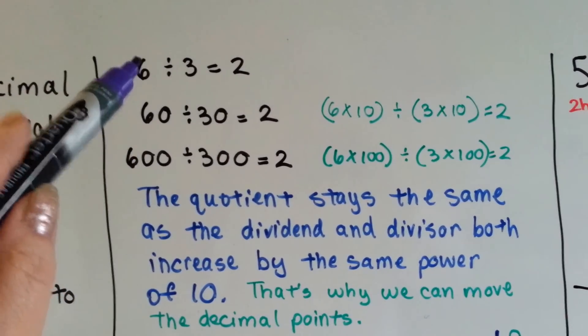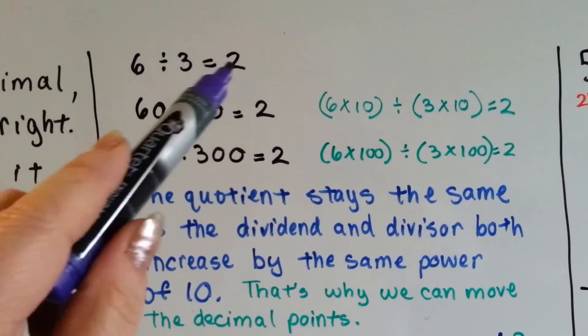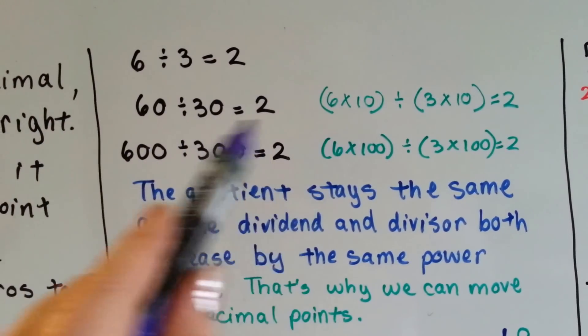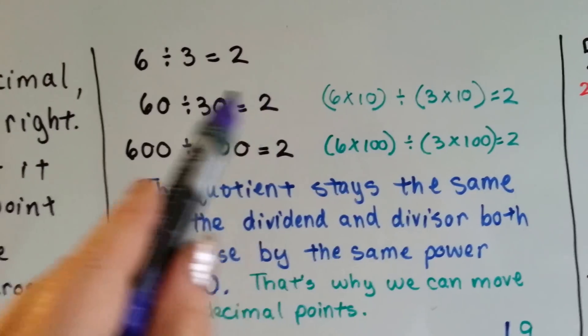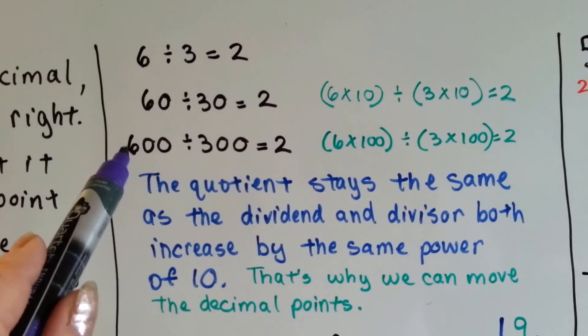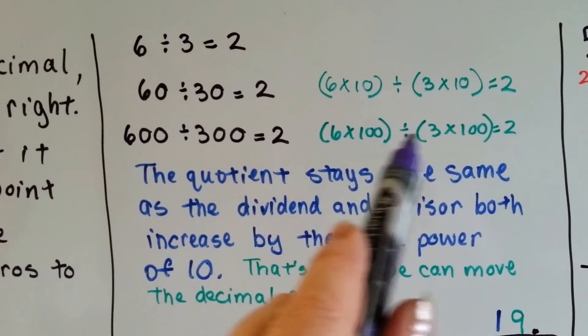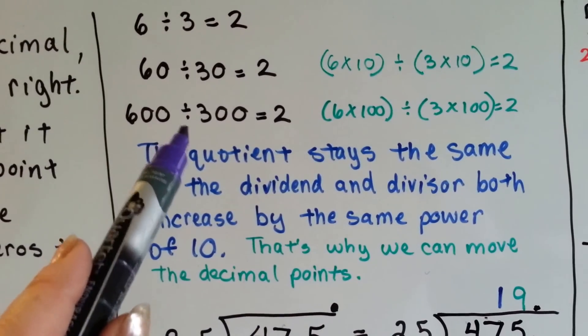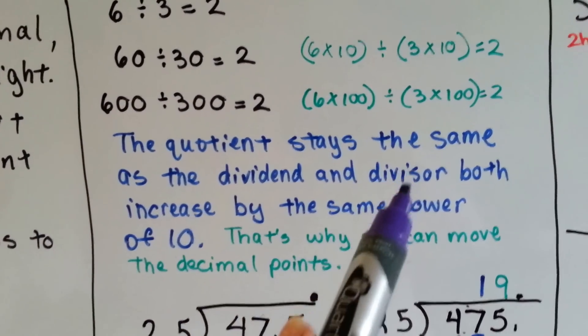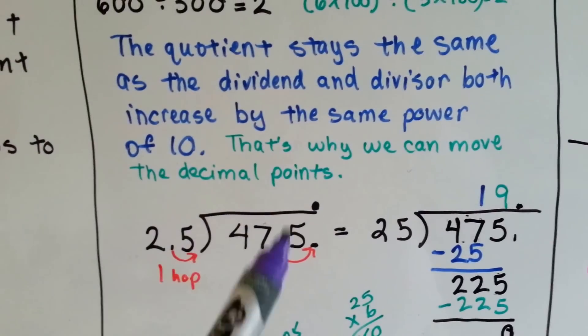So if we divide 6 by 3, we're going to get 2. And if we multiply the 6 and the 3 both by 10, it's still going to be 2. If we multiply the 6 and 3 by 100, the quotient's still going to be 2. But by multiplying them by those powers of 10, we move the decimal point.